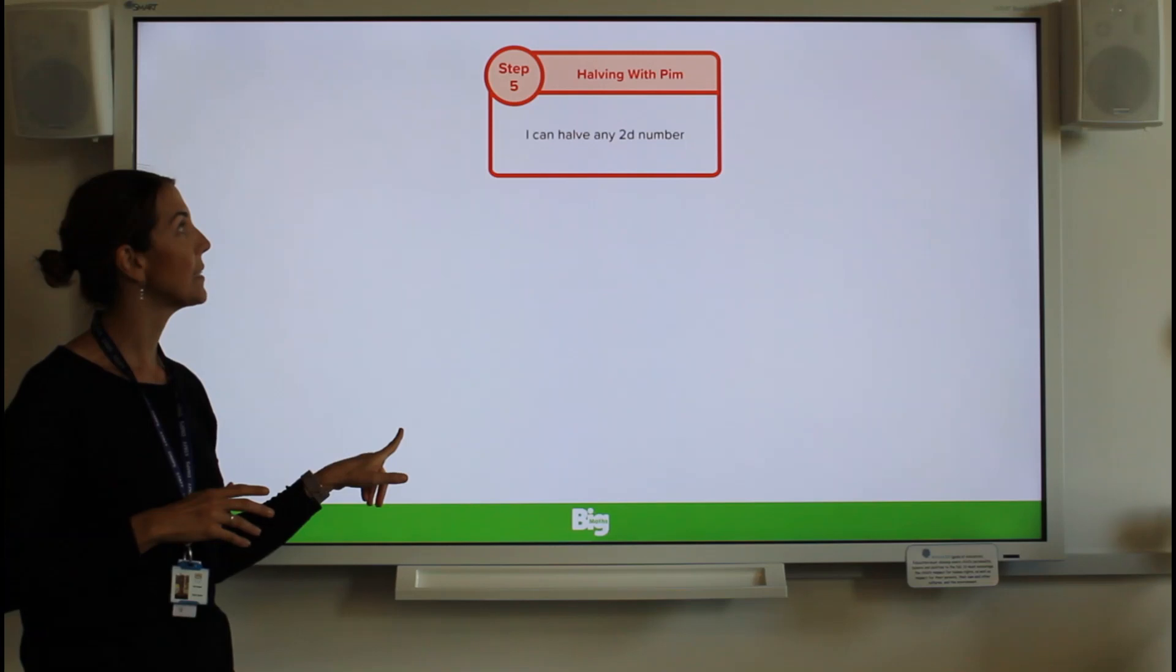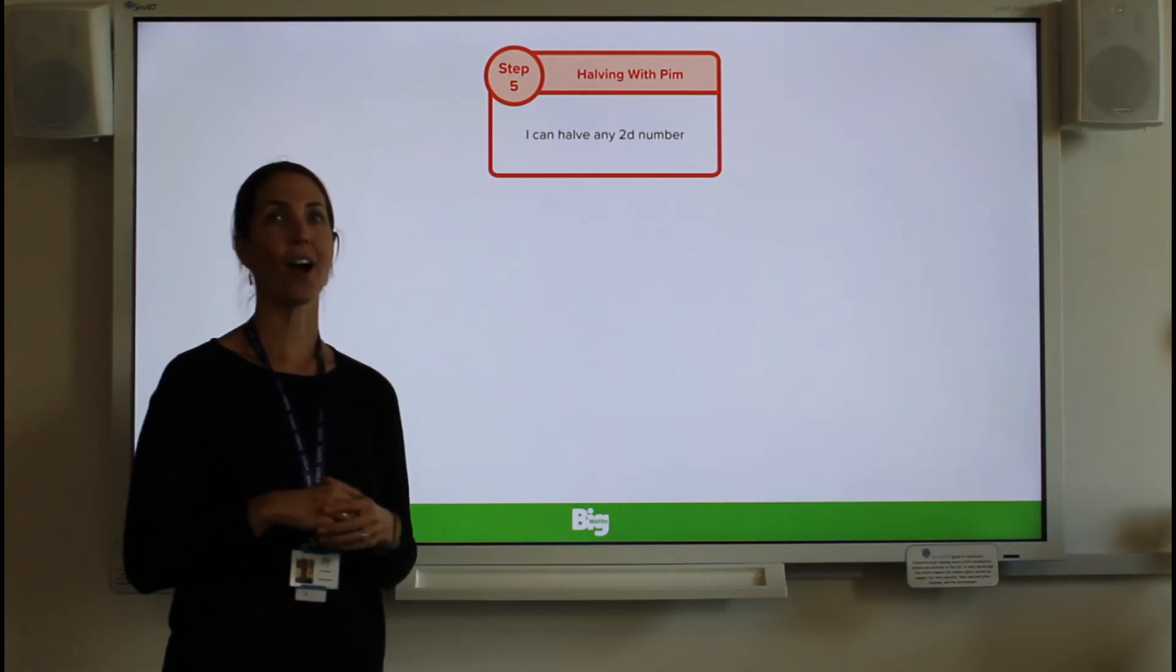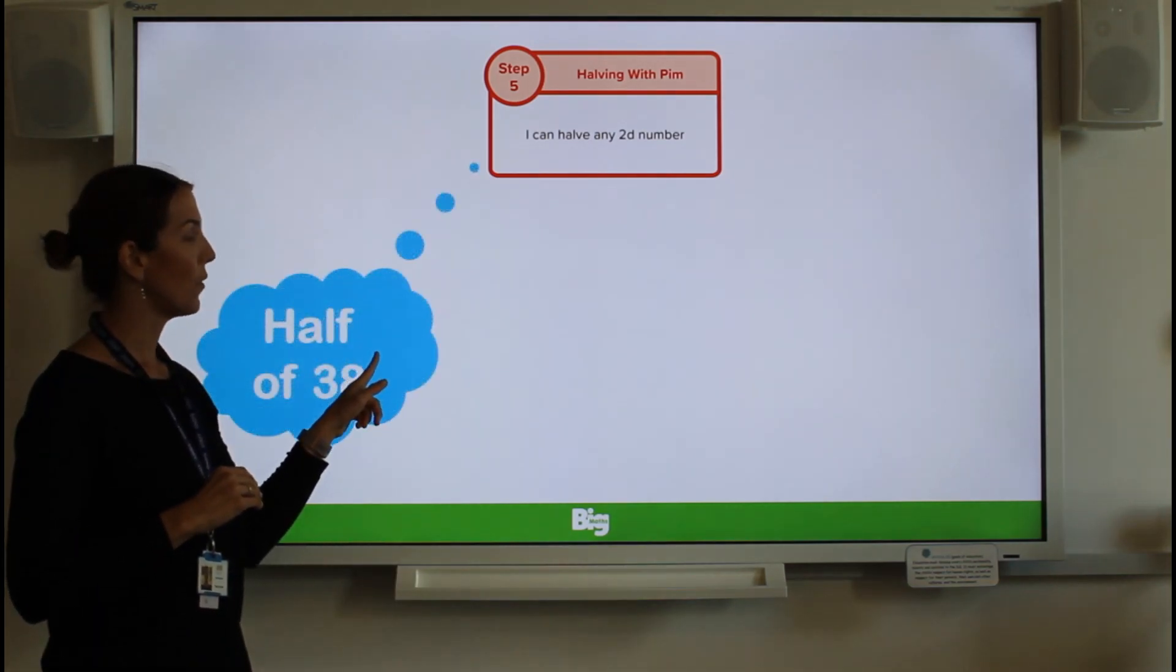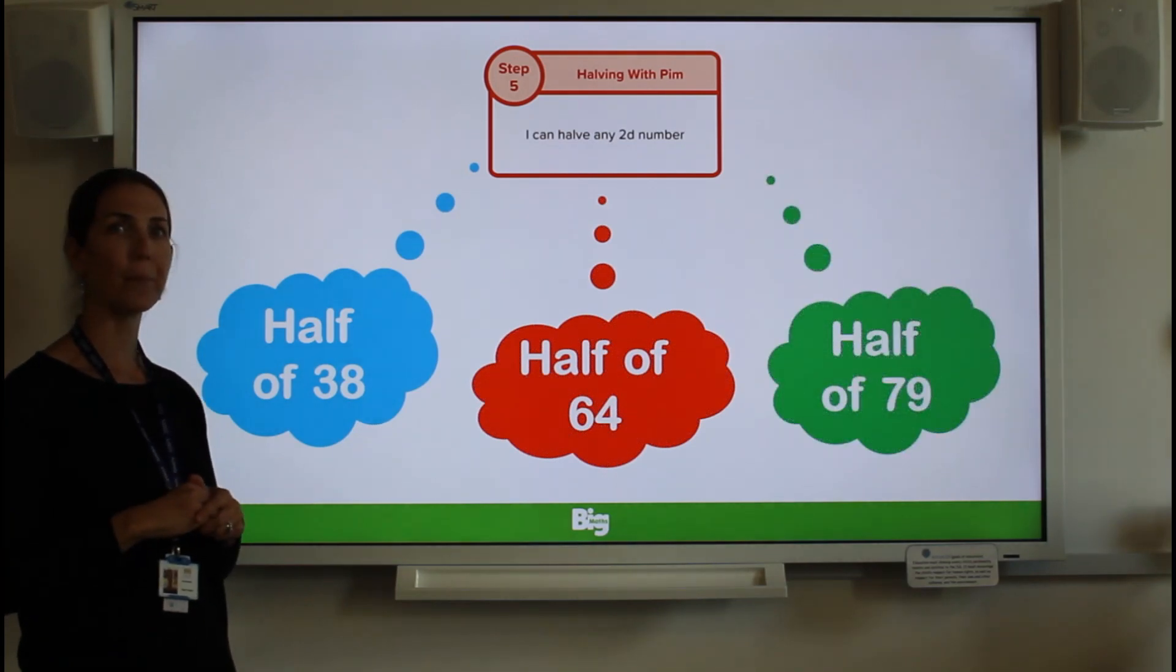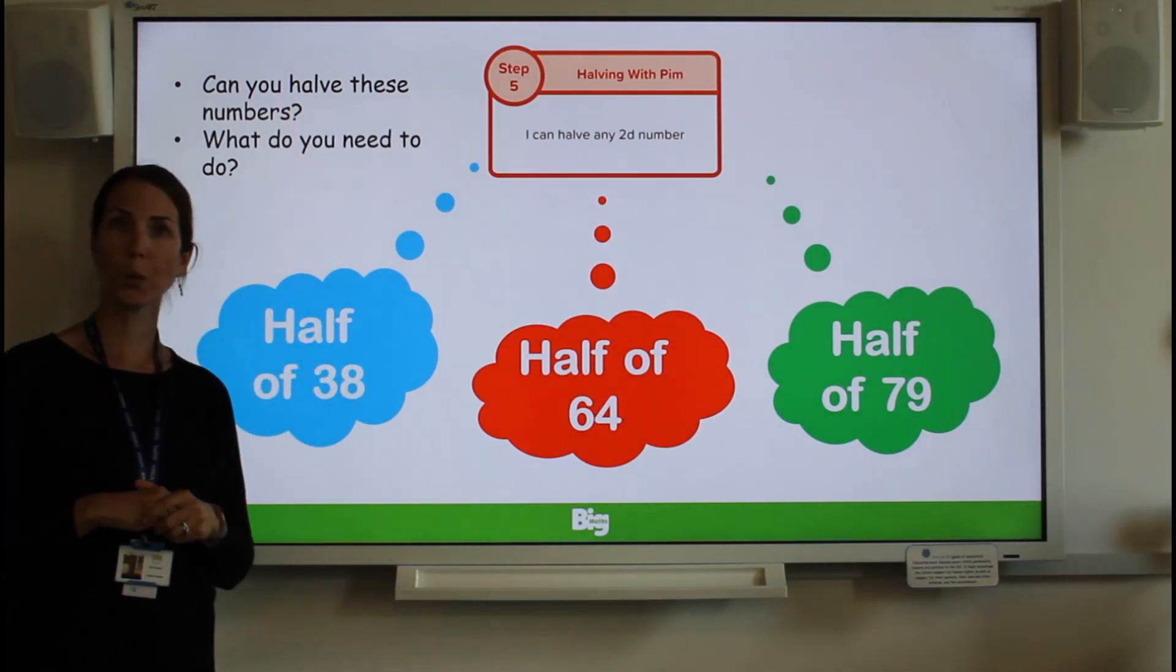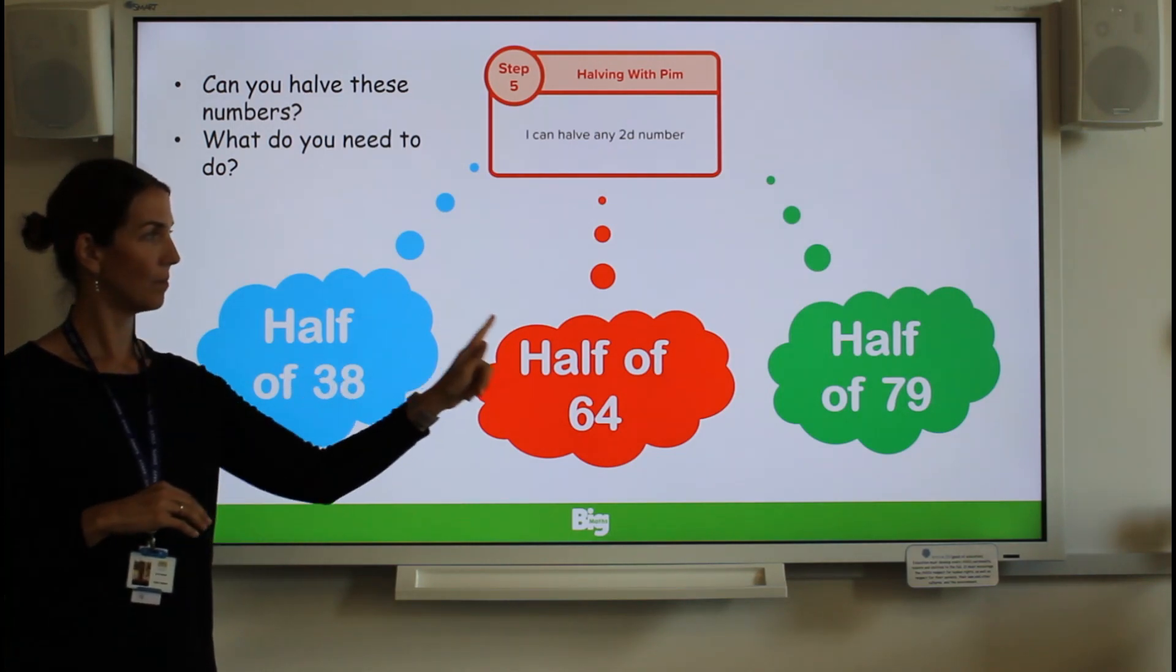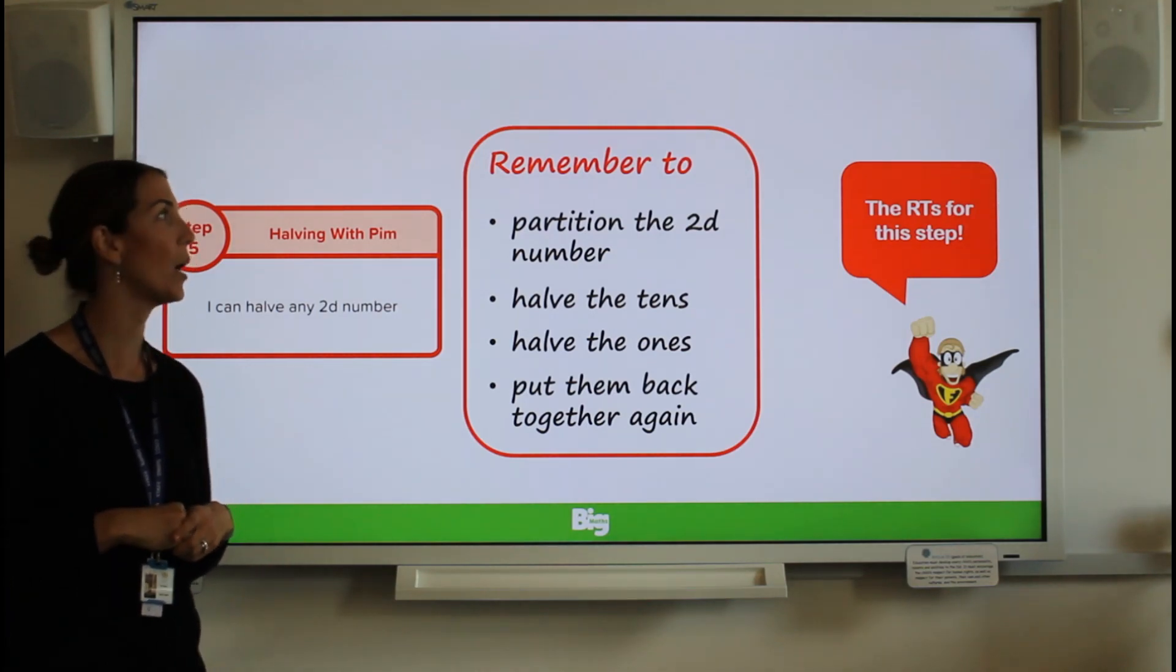Let's start with today's learning. So by the end of the lesson, you're going to say, I can half any two digit number. If I look at these three numbers, how can I possibly half them? Have a look at the two questions at the top. Can you half these numbers? And what do you need to do? Have a think. Maybe we need some remember twos. That's going to help us.